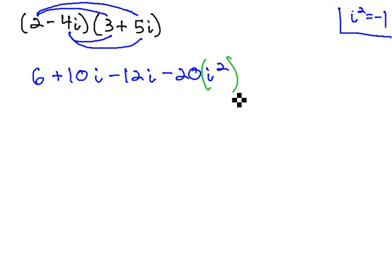We do see an i squared in this result, and we remember that i squared is really negative 1. Which means we're actually multiplying negative 20 times negative 1, which is positive 20.